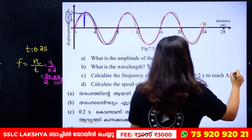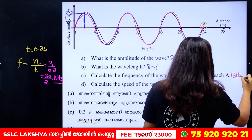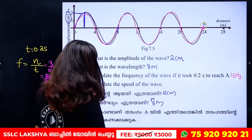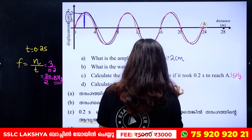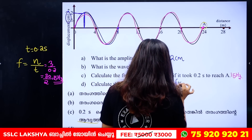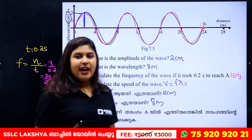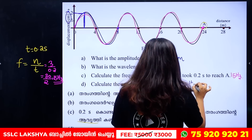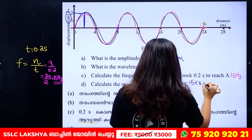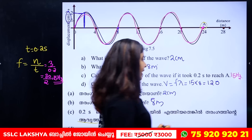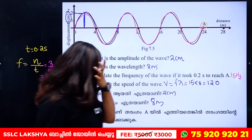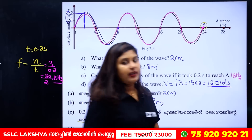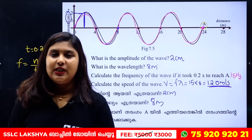So the frequency is 15 Hz. Now let's calculate the speed of the wave. V equals F times lambda. Frequency is 15, lambda is 8. So the speed is 15 times 8 equals 120 meters per second.